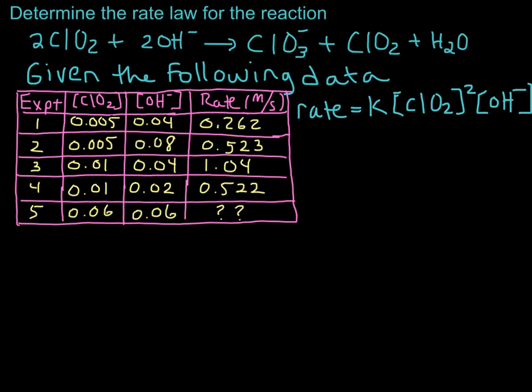So now we want to find the value for the rate constant K, so we want the value with units, and the way that we're going to do this is use any one of the first four experiments.